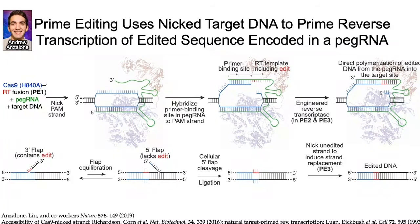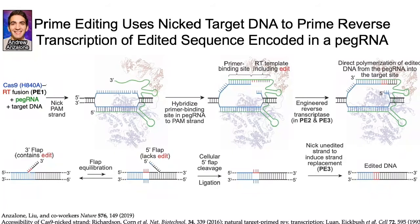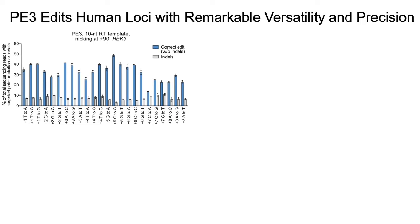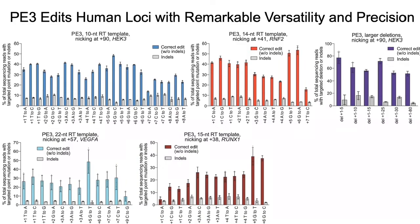Since the RT template of the pegRNA is specified entirely by the researcher, one can make virtually any small substitution, insertion, or deletion using this strategy. PE3 shows remarkable versatility in the types of edits that can now be directly installed in DNA in human cells. Shown here are all 24 possible single-base substitutions that we made in a stretch of eight consecutive DNA base pairs in the human genome. We can use prime editing to perform targeted transversions, deletions, insertions, and combinations thereof for the first time without requiring double-strand breaks or donor DNA templates.